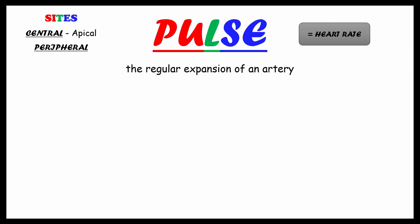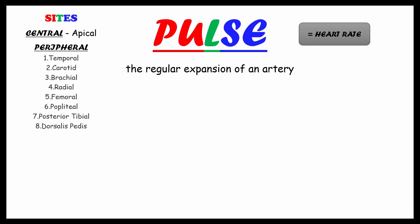Sites used to check the pulse are central, which we check on the apex of the heart using a stethoscope, and peripheral, where we check on arteries like temporal, carotid, brachial, radial, femoral, popliteal, posterior tibial, and dorsalis pedis. But the more commonly used sites are carotid, radial, and femoral.